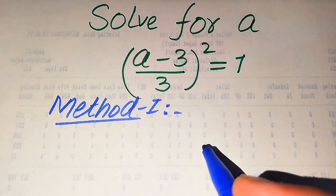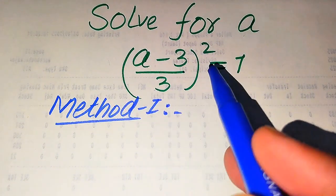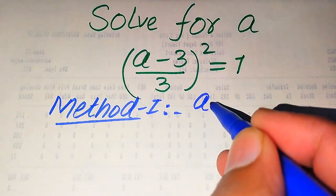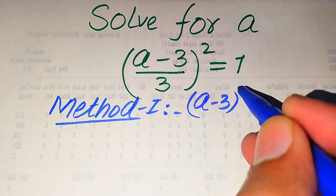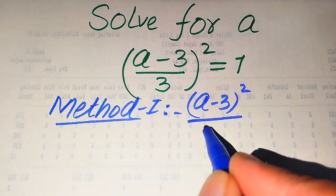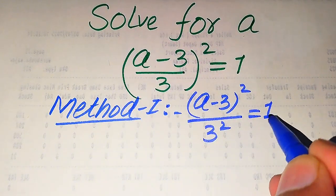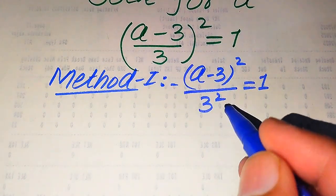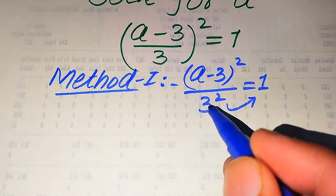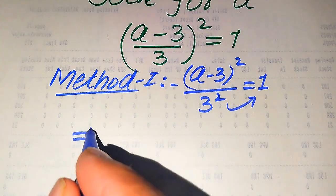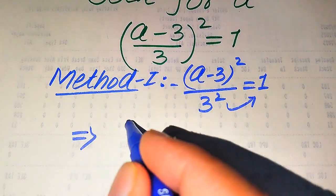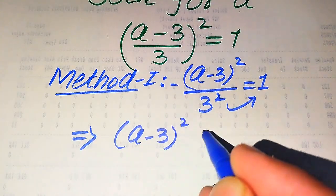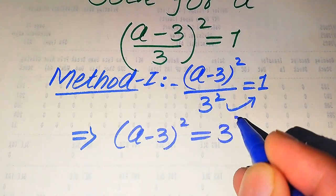Now we move to our first method. In the first method, we first break the square sign on both values. When we break the square sign it becomes (a minus 3) whole square divided by 3 squared equals 1. We then move the 3 squared to the right hand side — it was dividing on the left, so it multiplies on the right — giving us (a minus 3) whole square equals 3 squared.